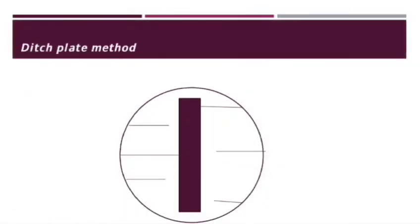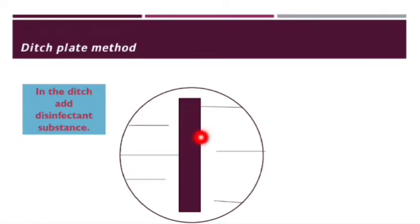How do we do this? This is a ditch plate method. We use an agar plate. It will be having a ditch at the center. Ditch means depression. In the ditch we add disinfectant substance.